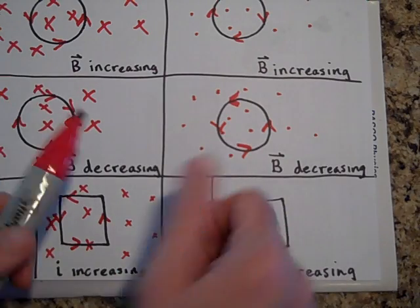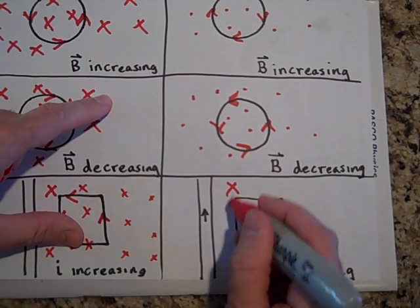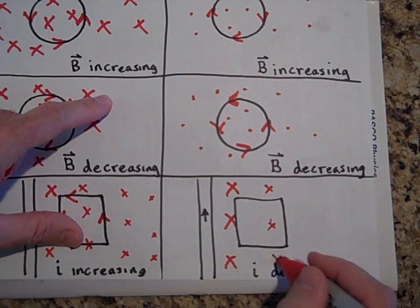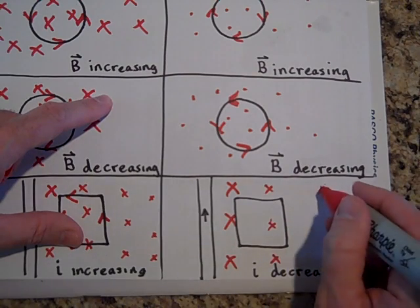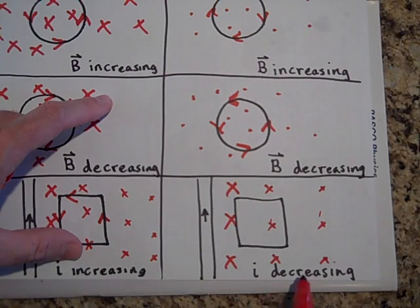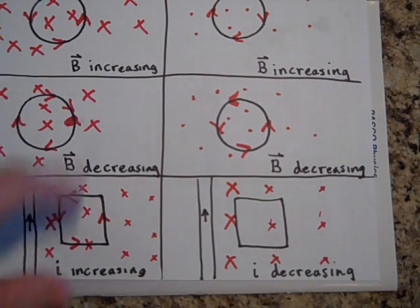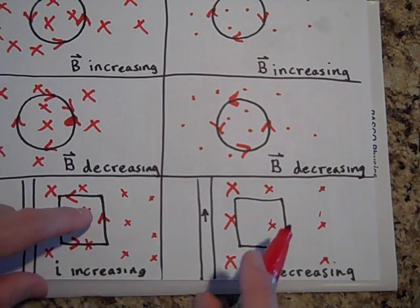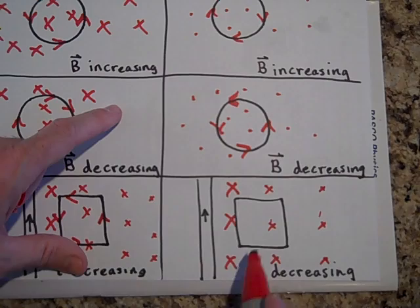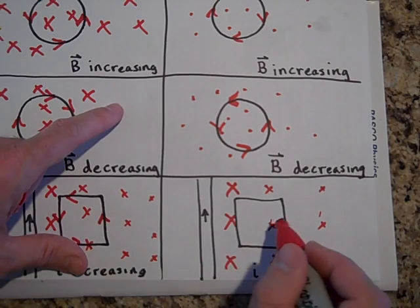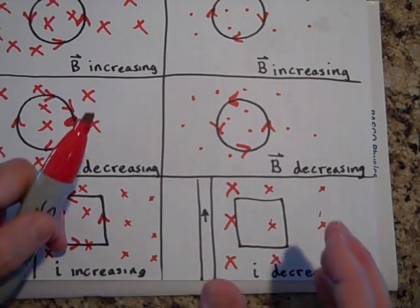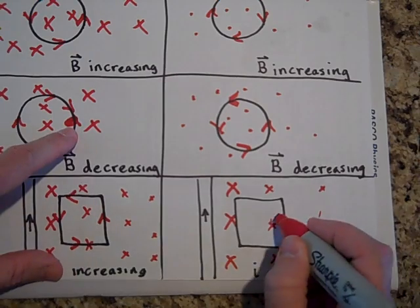The current I is decreasing, so these x's are going down. If they're going down, the hoop is going to try to make its own x's. To make its own x's, the current is going to go the other way.